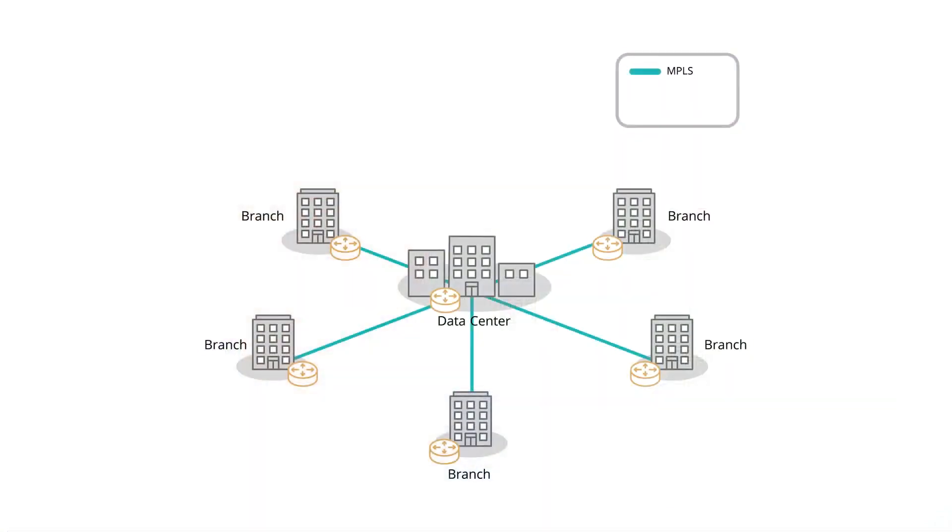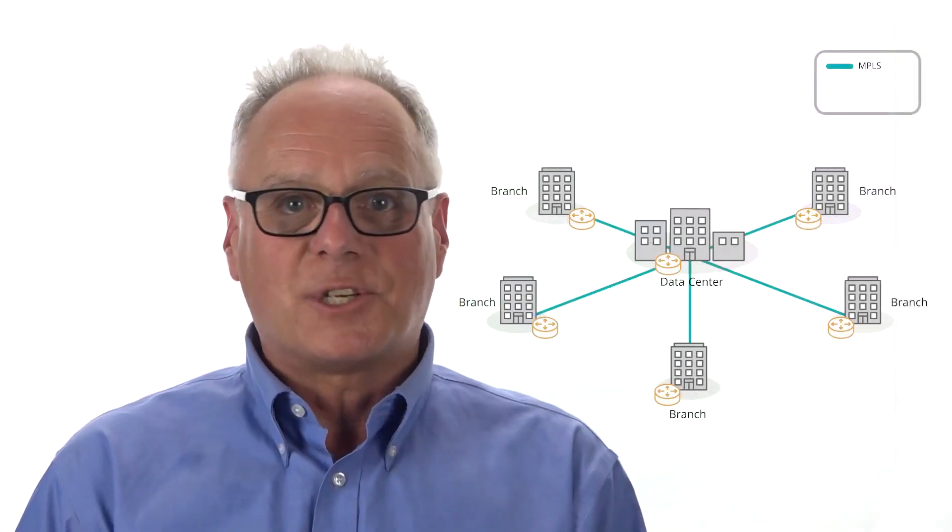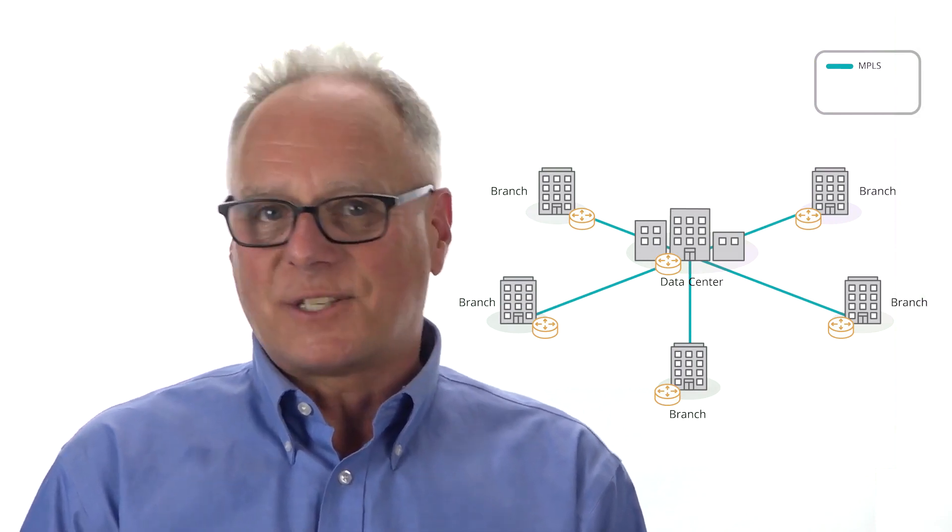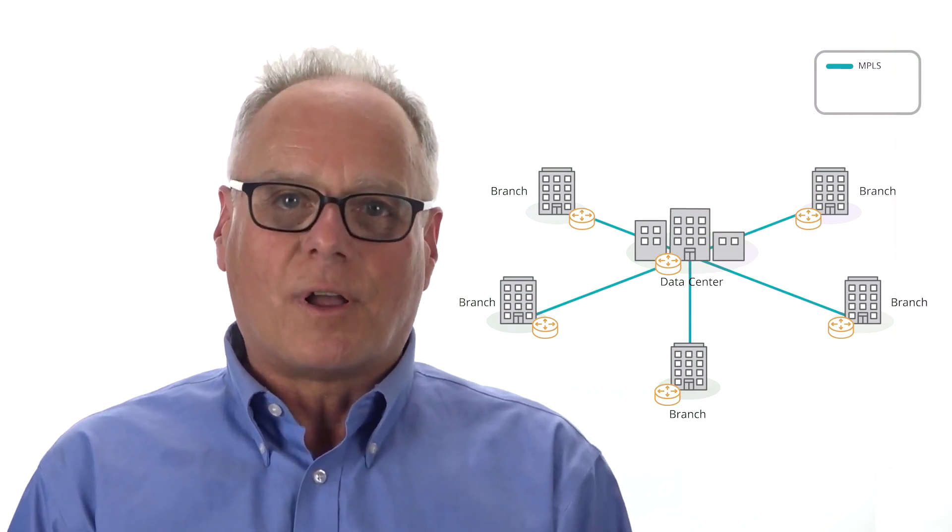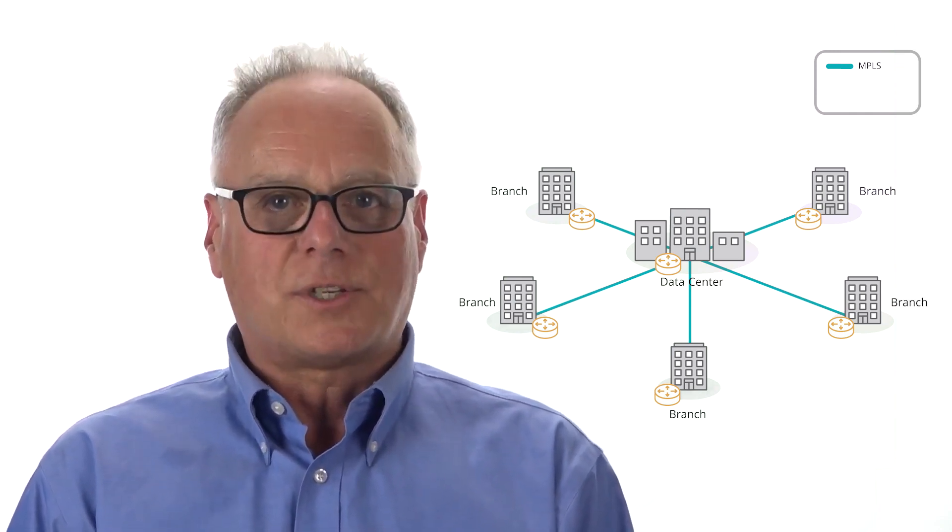But let's start by looking at the way we've built WANs for the past two plus decades. Branch offices where more than 80% of business transactions are handled were connected to a headquarters-based data center by a router over a leased line connection, usually MPLS. And that model was fine back then because all applications were hosted in enterprise data centers. Traffic was routed from sources to destinations based on TCP IP addresses, access control list tables, and complex routing protocols. All of the control functions were distributed across all of the routers.